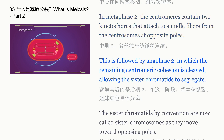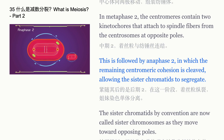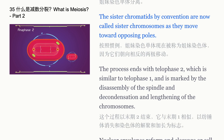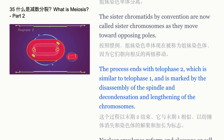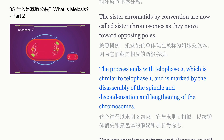This is followed by anaphase II, in which the remaining centromeric cohesion is cleaved, allowing the sister chromatids to segregate. The sister chromatids — by convention now called sister chromosomes — move toward opposing poles. The process ends with telophase II, which is similar to telophase I and is marked by the disassembly of the spindle and decondensation and lengthening of the chromosomes.